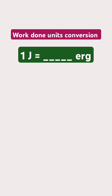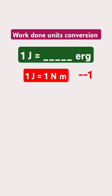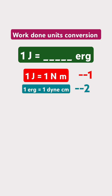In the previous video, we have learnt 1 joule is equal to 1 newton metre. Let us take it as equation 1. 1 erg is equal to 1 dyne centimetre. Let us take it as equation 2.